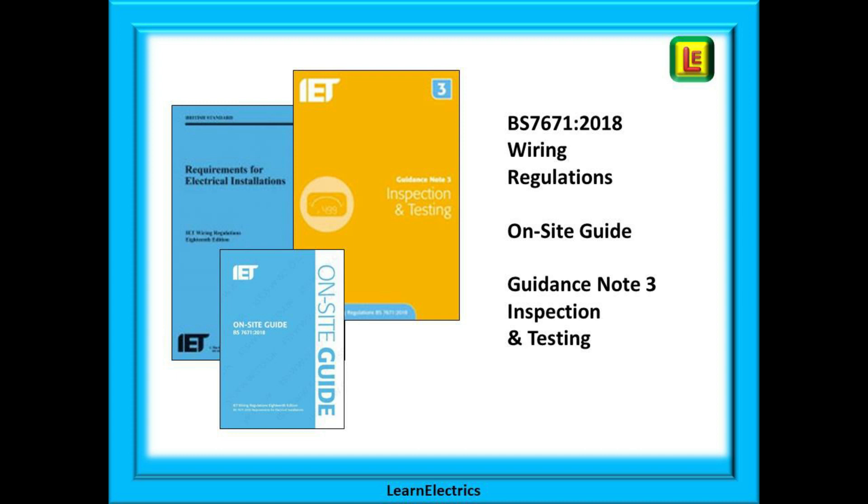You'll find examples of model forms in the IET books shown here which are BS 7671 wiring regulations, the on-site guide and guidance note 3 on inspection and testing.